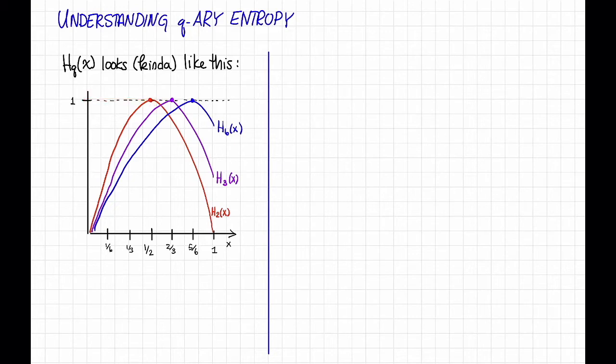The 3-ary entropy looks similar except it's shoved over to the right. It's still equal to 0 at 0, but now its maximum happens at 2/3 and still takes the value of 1. The 6-ary entropy is shoved over to the right even further. Its maximum occurs at 5/6 and still has the value of 1. More generally, the q-ary entropy function has a maximum at 1 - 1/q with value 1, and as q gets larger, it just gets shoved more and more over to the right.